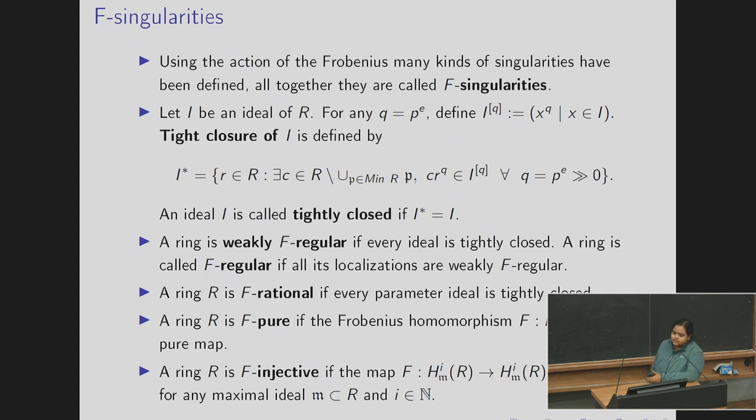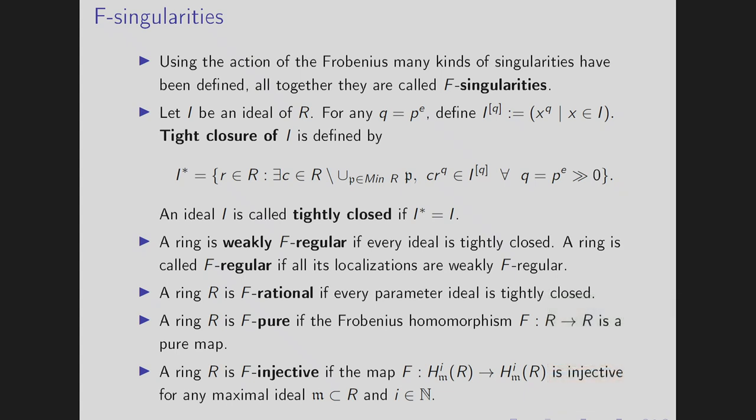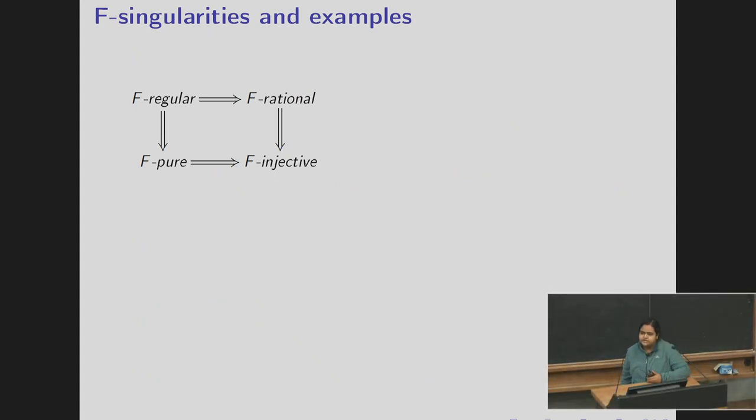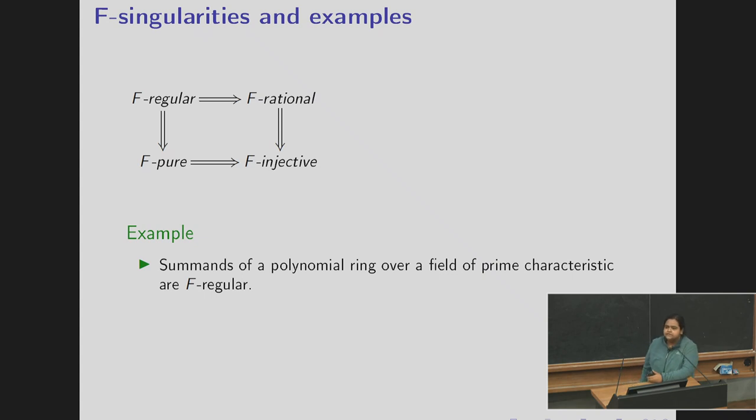So in the morning Professor Watanabe defined tight closure and weakly F-regular and F-rational. So I'll only just say the last two which is F-pure. F-pure means that the Frobenius morphism is a pure map. And F-injective meaning that the Frobenius action on the local cohomology module is injective. Now this shows the relations between various F-singularities.